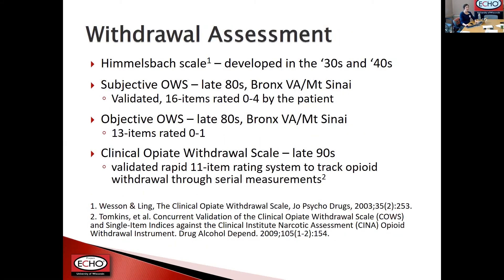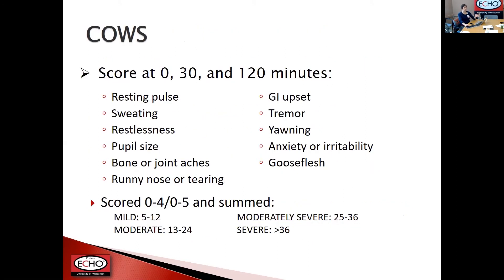A number of other scales were developed since, and most recently the Clinical Opiate Withdrawal Scale (COWS) in the late 1990s, which is what we use now. It's a validated, rapid 11-item rating system to track withdrawal through serial measurement. In the hospital, we measure it every four to eight hours depending on where someone is in their withdrawal process or induction onto an agent. In a clinic setting, if someone's starting buprenorphine, we often do measurements at zero, 30, and 120 minutes. The items tracked are: pulse, sweating, restlessness, pupil size, bony pain and joint aches, runny nose or tearing of the eyes, GI upset, tremor, yawning, anxiety/irritability, and goosebumps. Each item is scored zero to four or zero to five and summed for an overall severity rating.